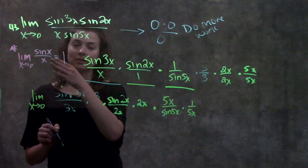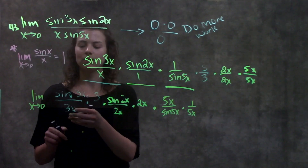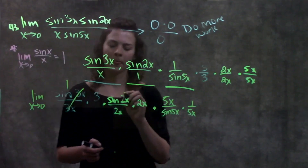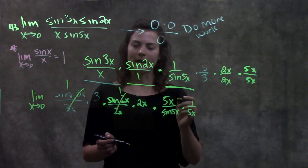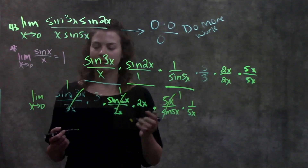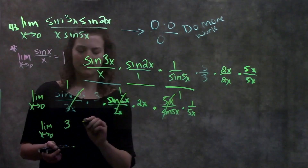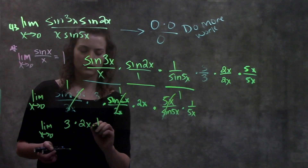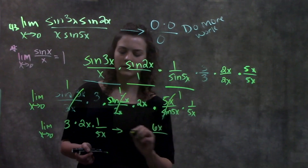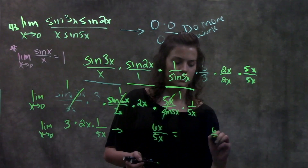Wherever we have a fraction that matches our identity I can cross it out and put one, because that's what our identity says: the limit as x approaches zero of sine something over something equals one. Sine three x over three x — cross that out, that's just one. Sine two x over two x — that's one. Five x over sine five x — it works the same way even though it's flipped — that's just one. Now I see what I'm left with: three times two x times one over five x. Multiplying that out: three times two x gives me six x over five x. The x's cancel and I'm left with six over five.